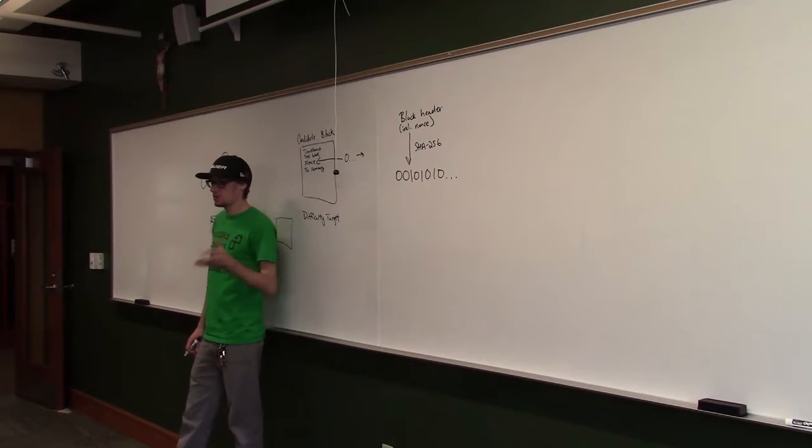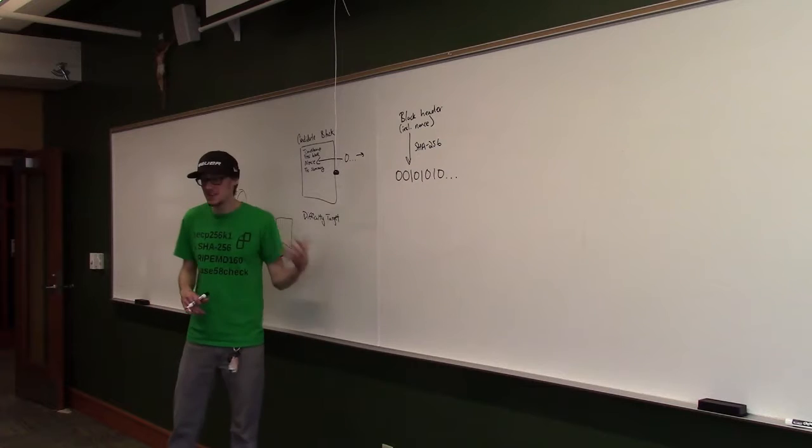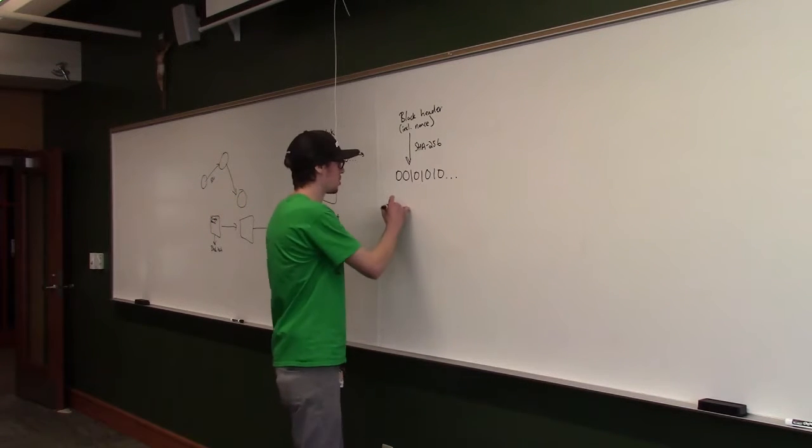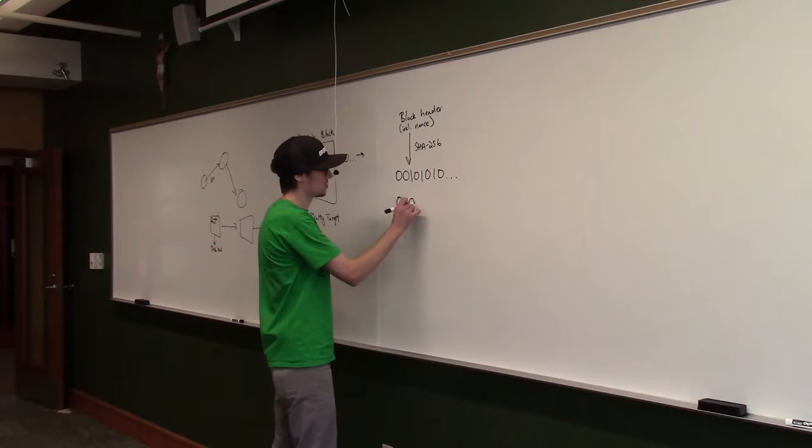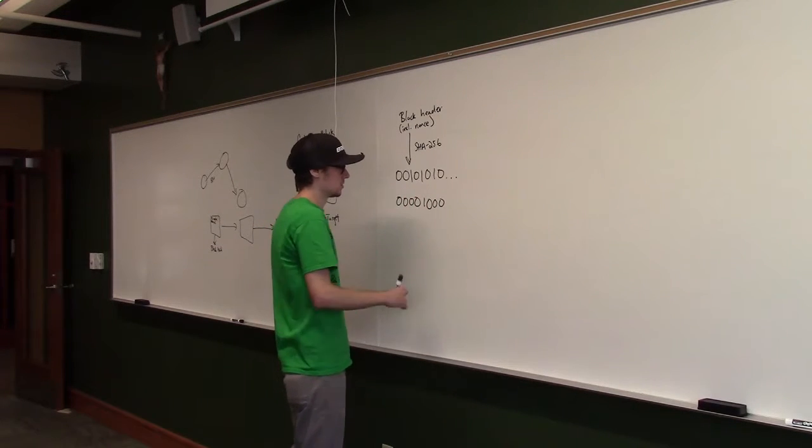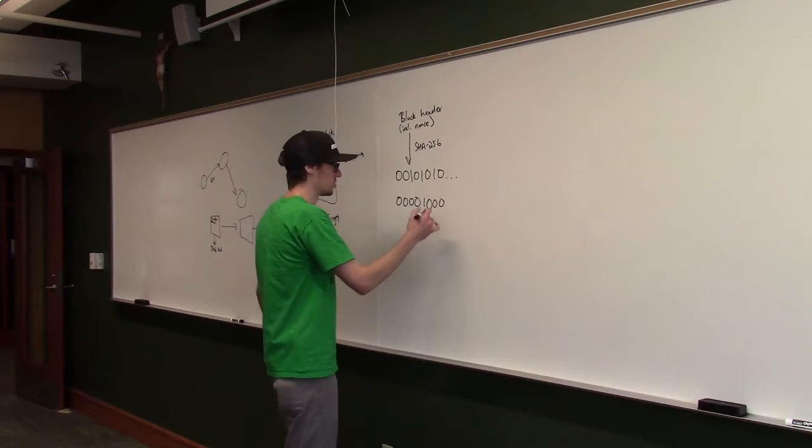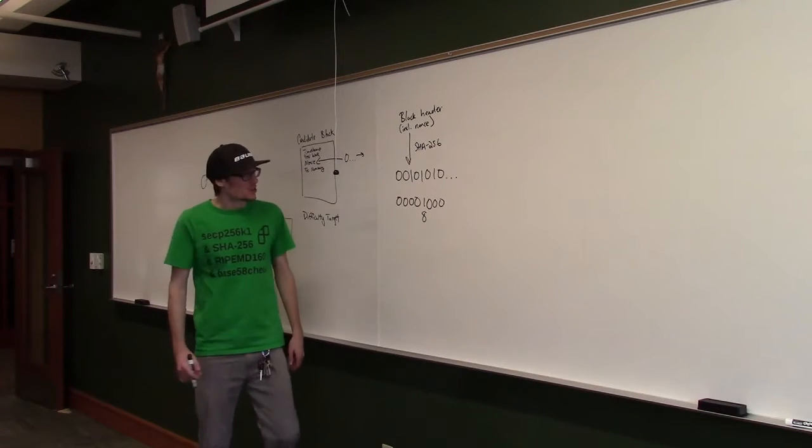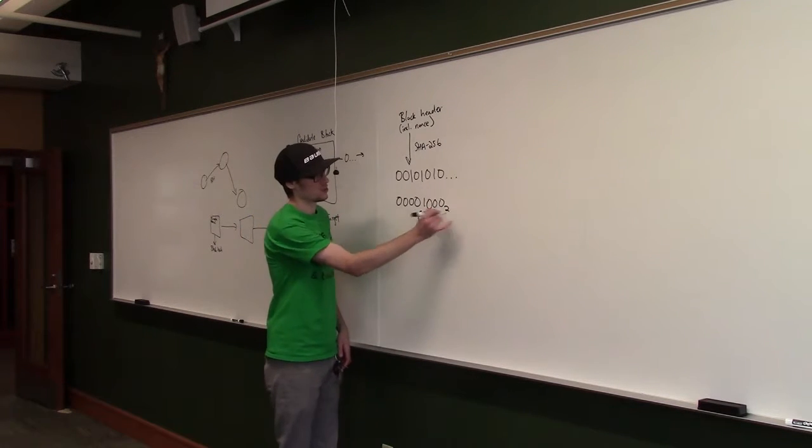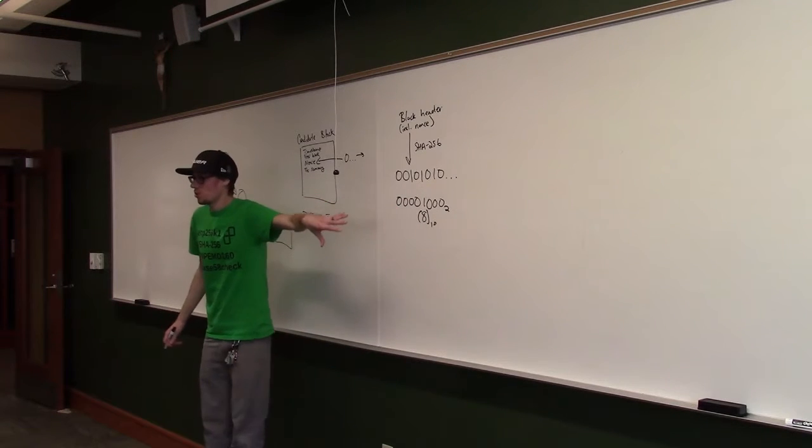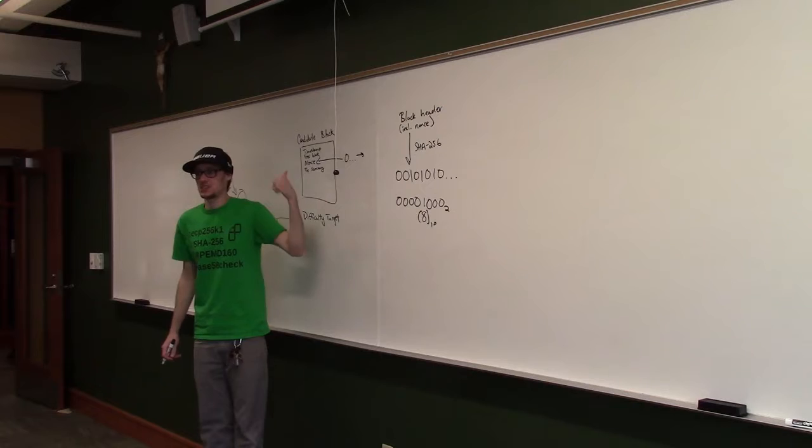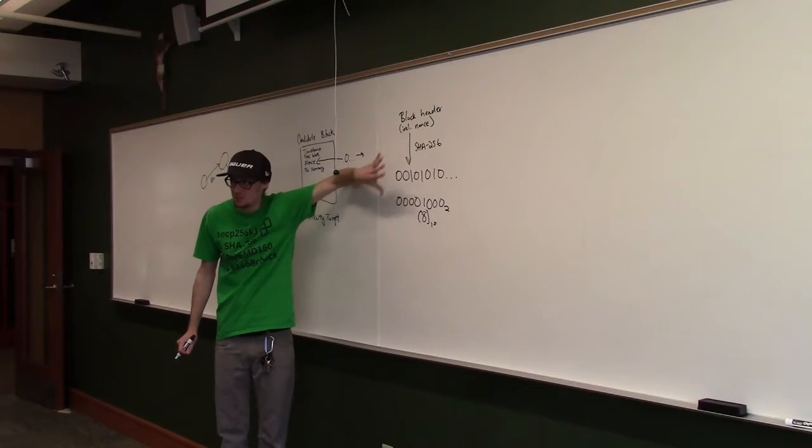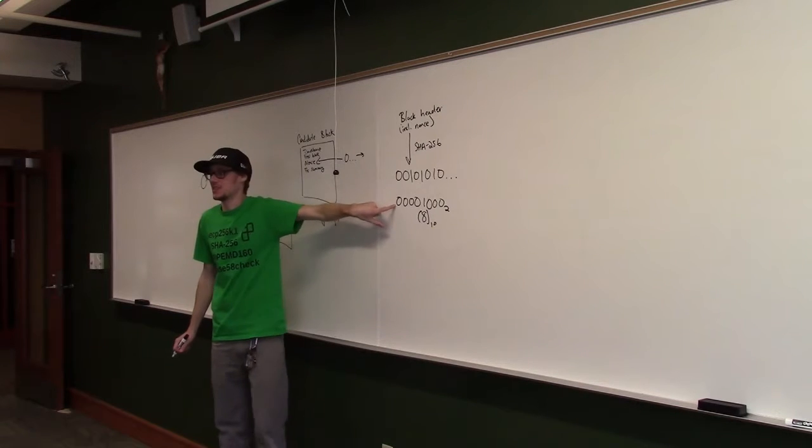You can think of this difficulty target as a 256-bit number, just like your hash output. So let's say, for example, our difficulty target is going to be 00001000. So 8. This is actually 8 in binary. So this is base 10, this is base 2. We have this difficulty target here. And in order for this to be a correct guess, in order for this nonce to be the proof of work that we did all this guessing work, this hash output, which is this fingerprint of the block data and the nonce, has to be less than this difficulty target.